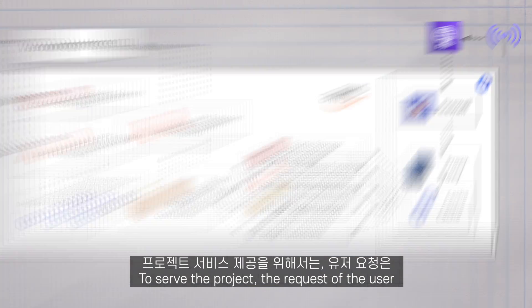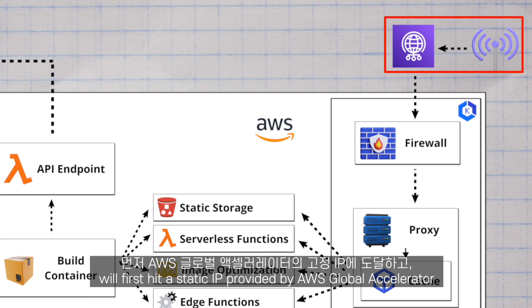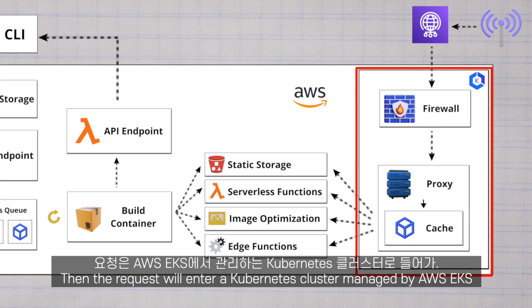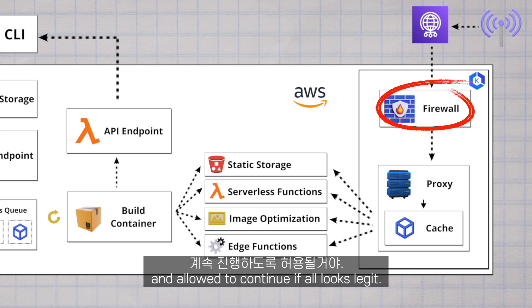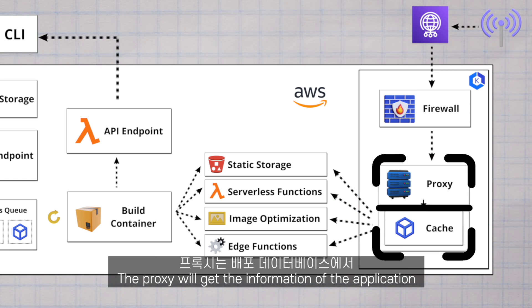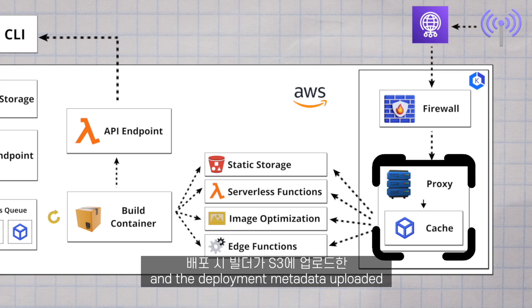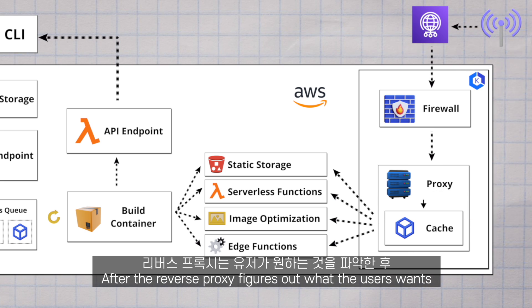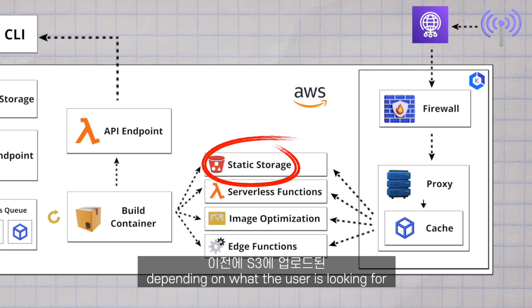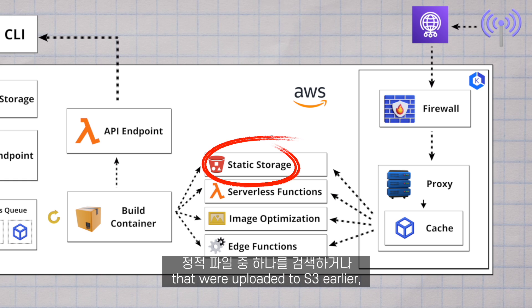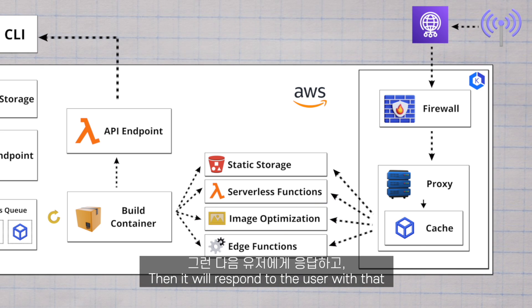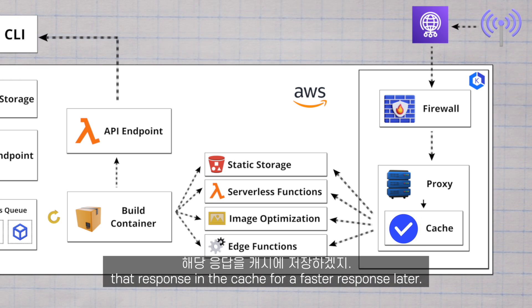To serve the project: the user's request first hits a static IP provided by AWS Global Accelerator, which finds the best data center to route the request to. The request then enters a Kubernetes cluster managed by AWS EKS, where it is checked by a firewall. If all looks good, the request goes to a virtual machine running a reverse proxy. The proxy retrieves information about the application from the deployments database and S3 metadata. It first searches the cache, and if the content isn't there, depending on what the user wants, the proxy retrieves static files from S3, runs an AWS Lambda function, runs a middleware function, or performs image optimization — then responds to the user and saves the response in cache for faster future replies.